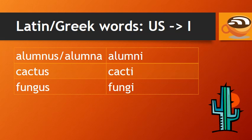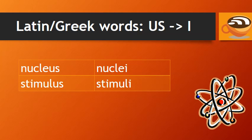Some words coming from Latin or Greek have singular forms ending in -US and plural forms ending in -I. For example: alumnus and alumna are the singular forms, and alumni is the plural form. Cactus, cacti; fungus, fungi; nucleus, nuclei; stimulus, stimuli.